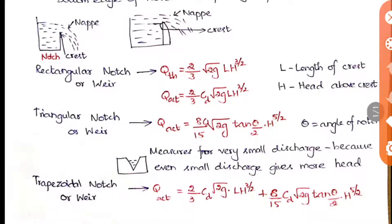Here is the formula for calculating the quantity of discharge. The first one is the rectangular notch or rectangular weir — the formula is the same for both. The theoretical value is Q = (2/3) × √(2g) × L × H^(3/2). Here L is the length of the crest and H is the head of water above the crest. For actual discharge, multiply by the coefficient of discharge Cd, which will be given in the question.